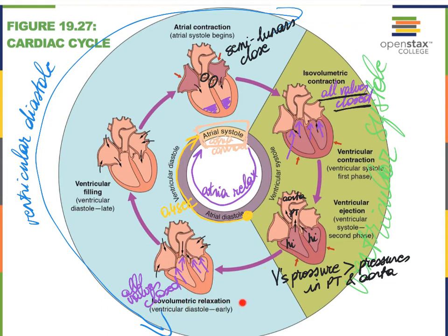Once again, we're back to an isovolumetric phase, but this time the heart is relaxed — so we call it the isovolumetric relaxation phase. These isovolumetric time periods are very brief. As the ventricular pressure continues to decrease, blood starts to fill the heart again. In fact, blood may have already begun to fill the atria somewhat during the isovolumetric relaxation phase of the ventricles, and we start the whole cycle all over again.